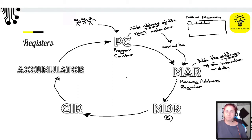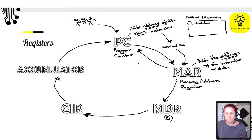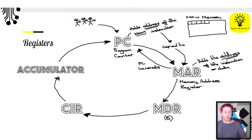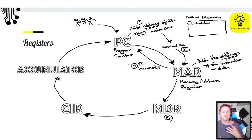Once the address has been copied from the PC into the MAR, the PC can then look ahead. The PC increments — it goes and gets the next address ready. Stage one: holding the address. Stage two: it's copied into the MAR. Stage three: the program counter goes and gets the next one because it's ready to move forward.